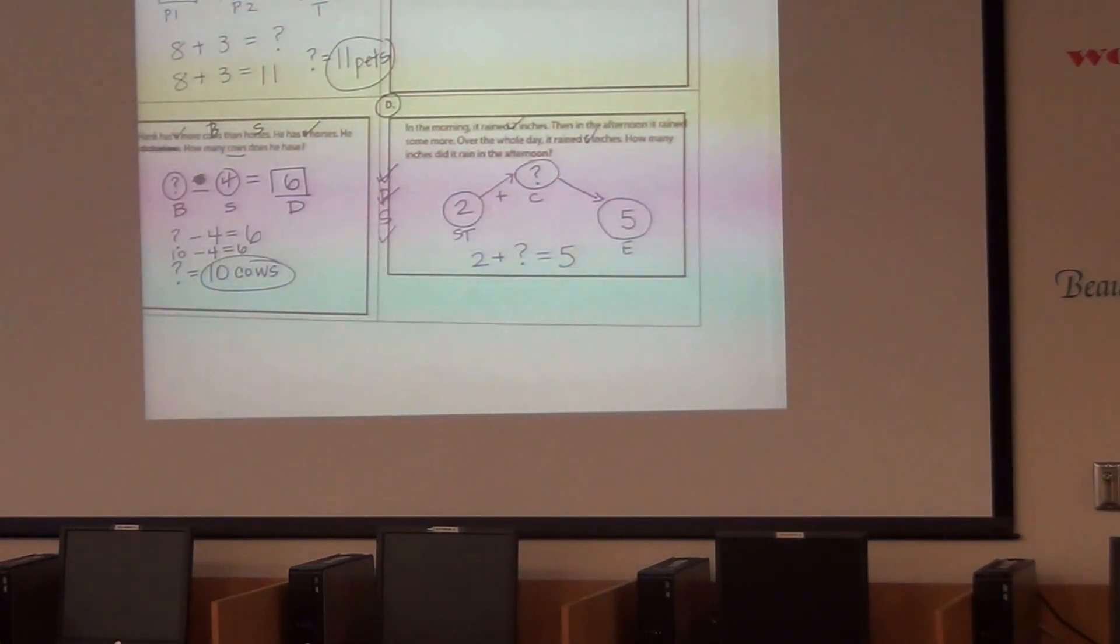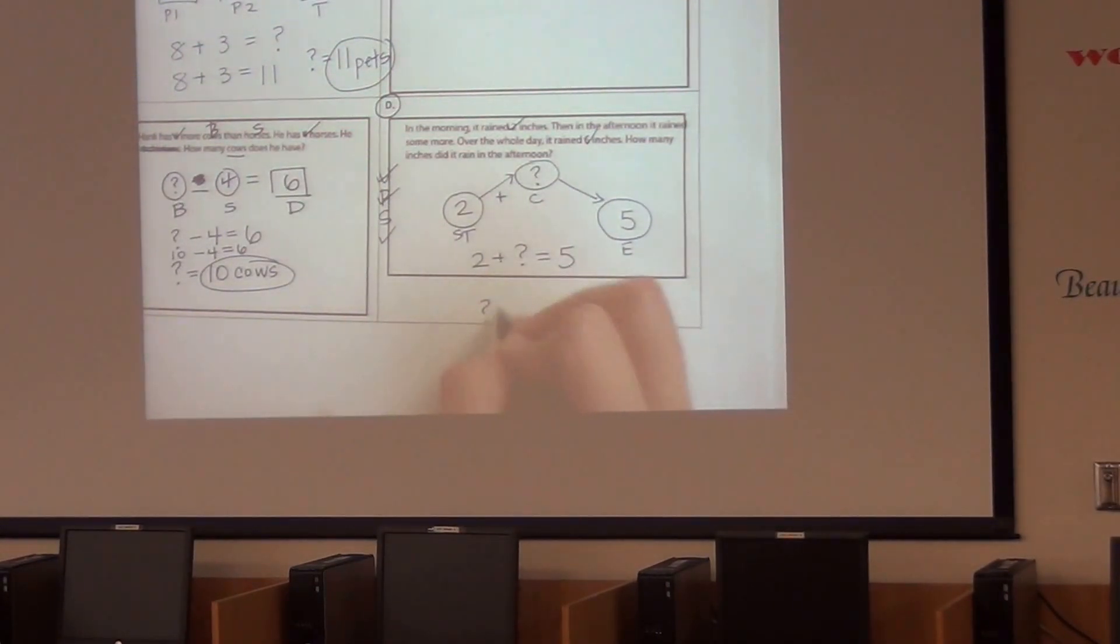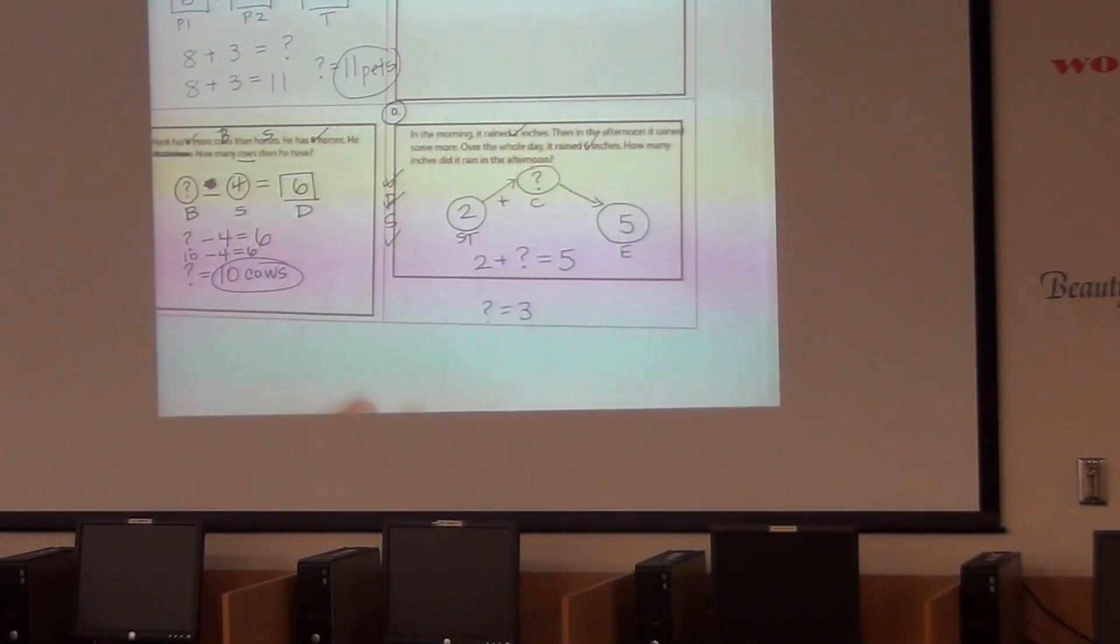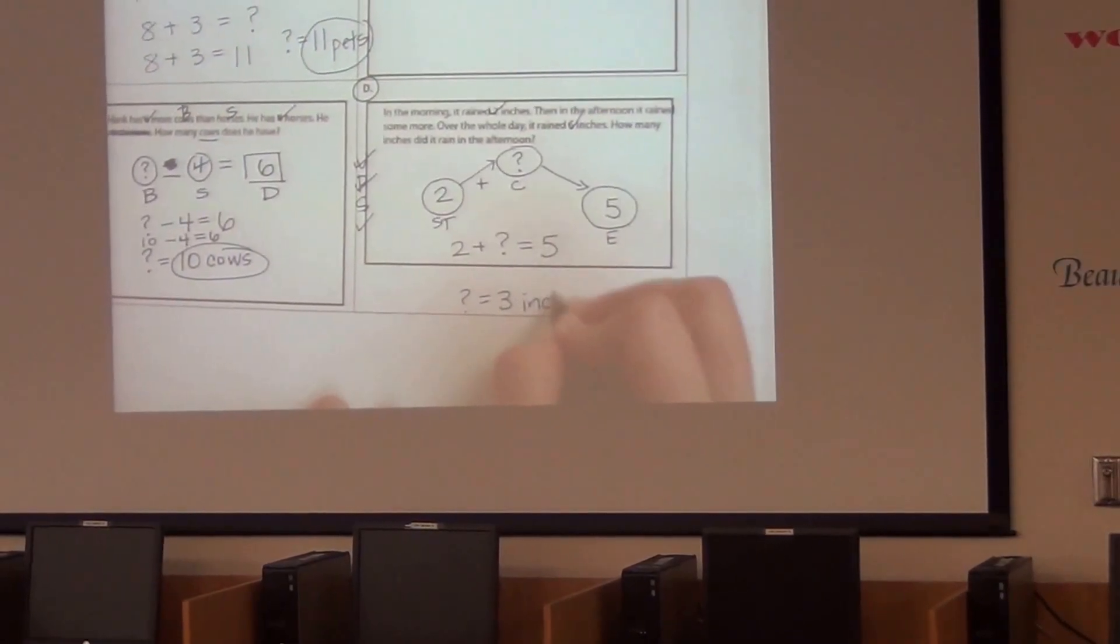I need some help here. What can I add to two to make five? Everyone? Three. So I cross out the question mark—it's three. I can't leave three by itself. What would be a good label for three? Inches. Three inches. Really nice.